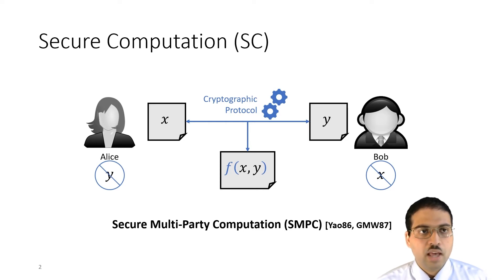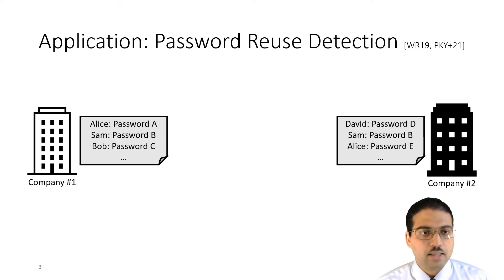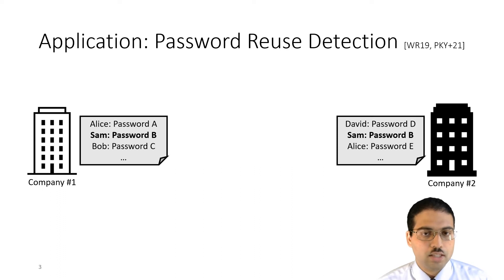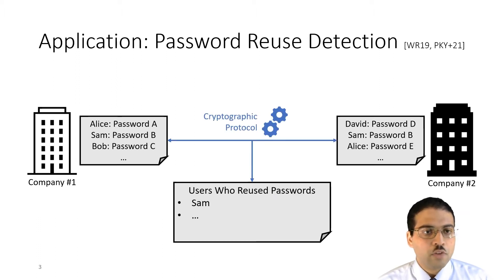To show why this is useful, let me explain an application of SMPC called password reuse detection. Imagine two companies that each run websites, where each website has a list of usernames and passwords. Some users may reuse their password across websites. That's bad because if an attacker compromises their password on one website, the attacker can use it to log in on both websites. The companies may want to detect when users reuse their passwords so they can ask them to change. SMPC allows them to do this without revealing anything about their other users or passwords to the other company.